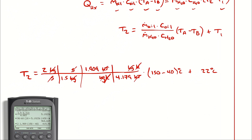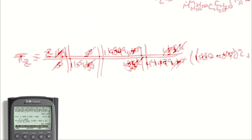Computing: (2 times 1.909) divided by (1.5 times 4.179), multiplied by (150 minus 40), plus 22, gives approximately 89 degrees Celsius. So the exit temperature of the water is T2 approximately equal to 89 degrees Celsius.